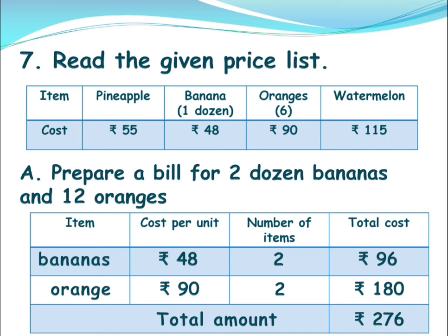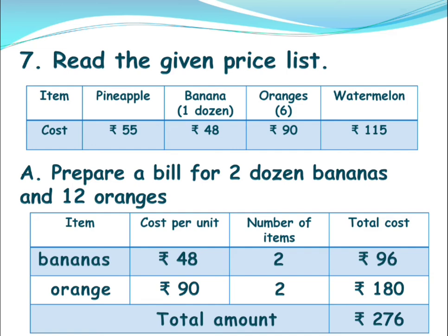Here they have given only two items, but if you include one pineapple, there will be one more row where you write about pineapple — that is 55 rupees for one unit. If you are taking one pineapple it is 55 rupees; if you are taking two pineapples, that is 55 into two, and you need to calculate the total amount. So children, please copy this down in your classwork book.